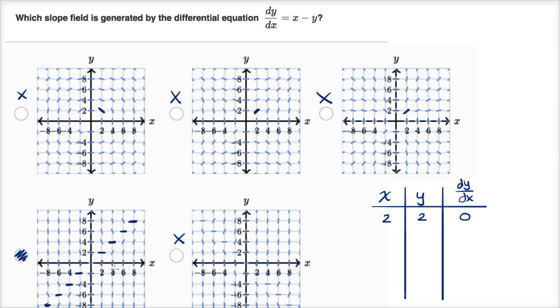And then we could pick other arbitrary points. Let's say when x is four, y is two, then the derivative here should be four minus two, which is going to be two. So when x is four, y is two, we do indeed see that the slope field is indicating a slope that looks like two right over here.